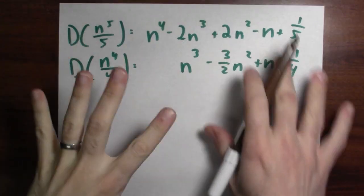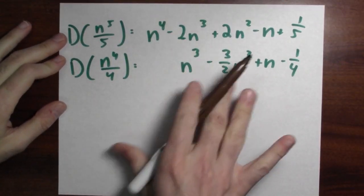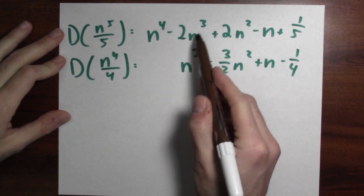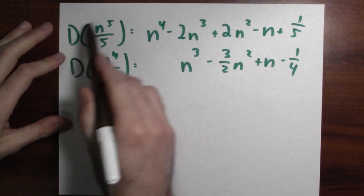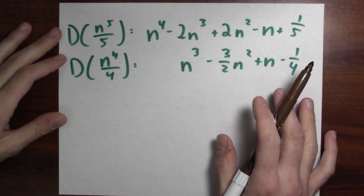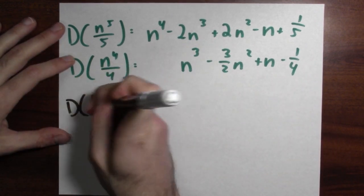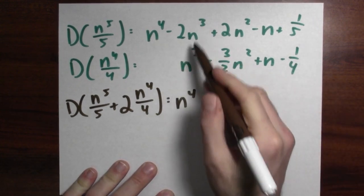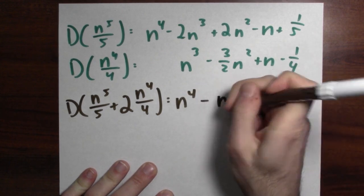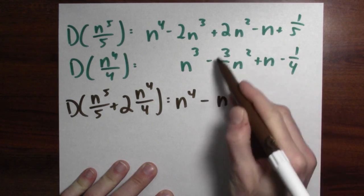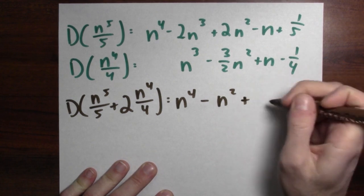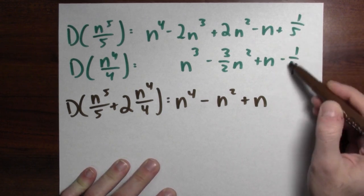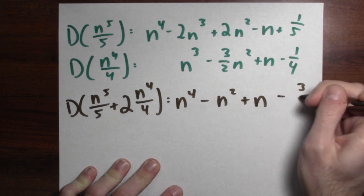Let's combine those two. I've got an n to the fourth in the first formula and that's what I want. There's a minus 2n cubed there, and just an n cubed in the second formula. So if I take the first and add two copies of the second, I'd be in good shape. That gives differences of n to the fifth over 5 plus 2 copies of n to the fourth over 4, yielding n to the fourth. The n cubed term cancels, I get minus n squared (from 2n squared minus 2 times three halves n squared), plus n (from minus n plus 2 copies of n), and one fifth minus two copies of one quarter gives minus three tenths.